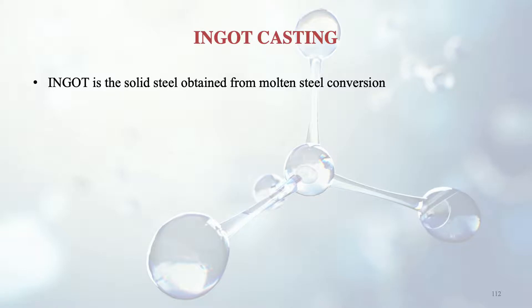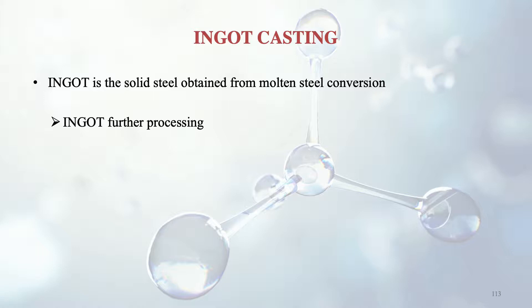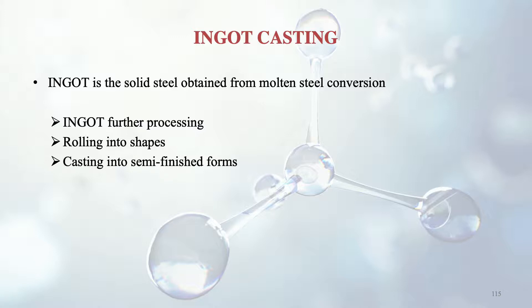Vacuum melting is also used because it produces very high quality steels by removing gases and impurities from the molten metal. Further, the process moves to ingot casting. An ingot is the solid steel obtained from molten steel conversion, which is then further processed by rolling into shapes, cast into semi-finished forms, or forged.